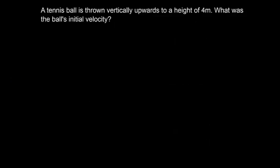Let's try just one more example. This time, a tennis ball is thrown vertically upwards to a height of 4 metres. What was the ball's initial velocity? At first glance, this question may look like it doesn't have quite enough information. As always, let's begin by writing out our SUVAT. So S here is 4 metres. That is the vertical displacement of the ball. U is the initial velocity. That's what we're trying to find out. So we'll put a question mark there.